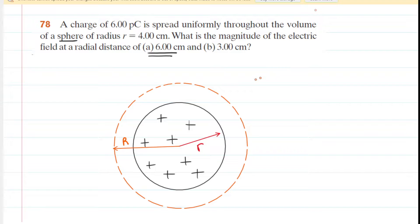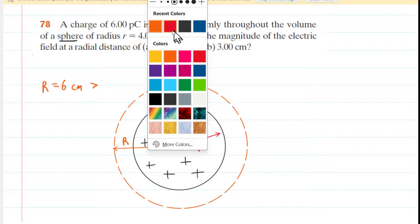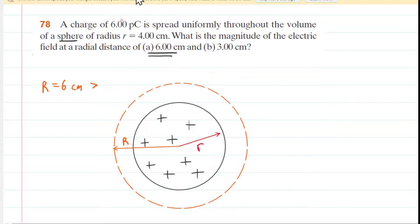We've labeled the radius of the Gaussian surface as capital R. Notice that in Part A, capital R is 6 centimeters, which is going to be larger than the lowercase r, which is the 4 centimeters — the radius of the sphere of uniform charge. So we just want to make sure we understand that capital R is bigger than the lowercase r.